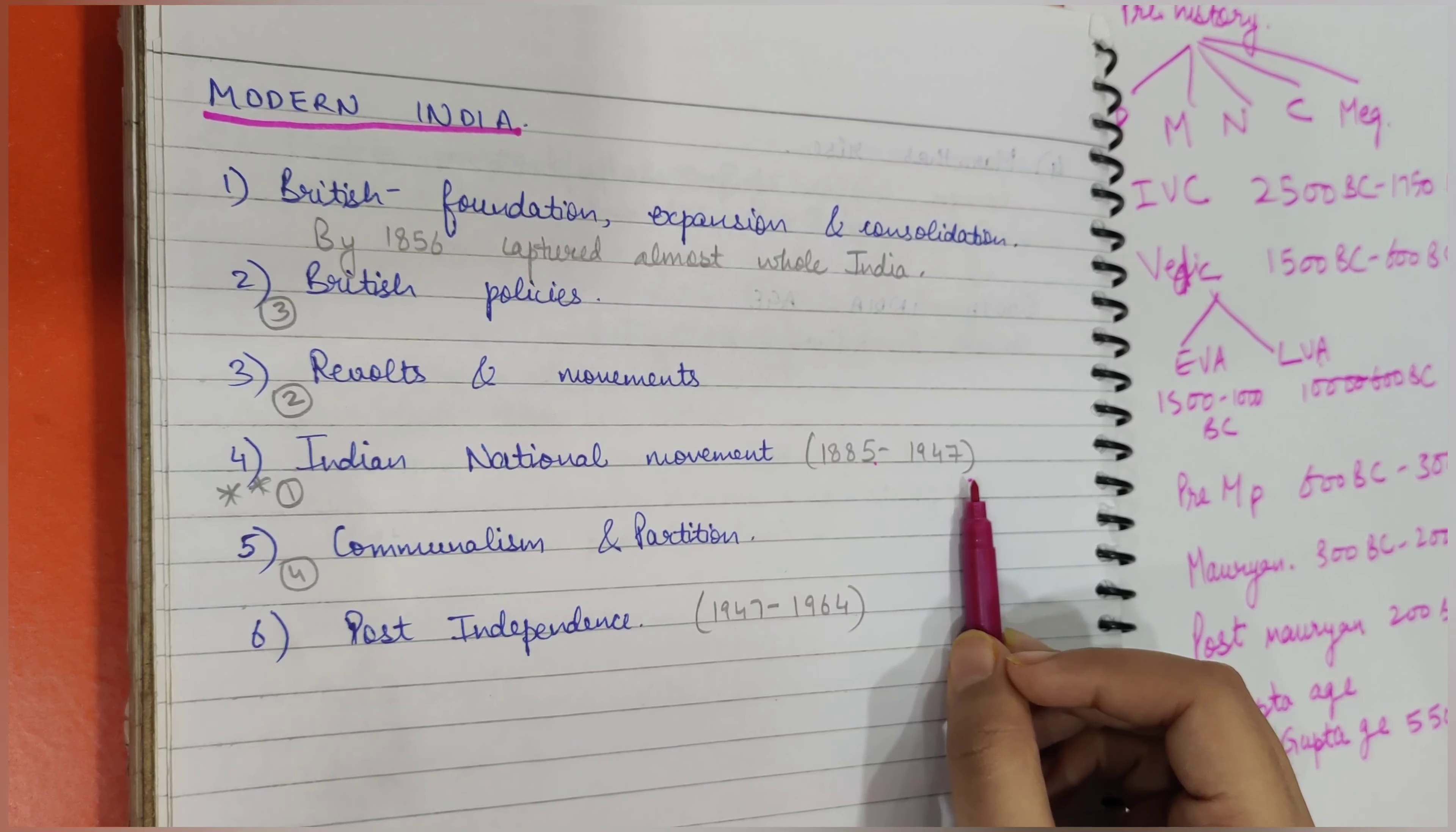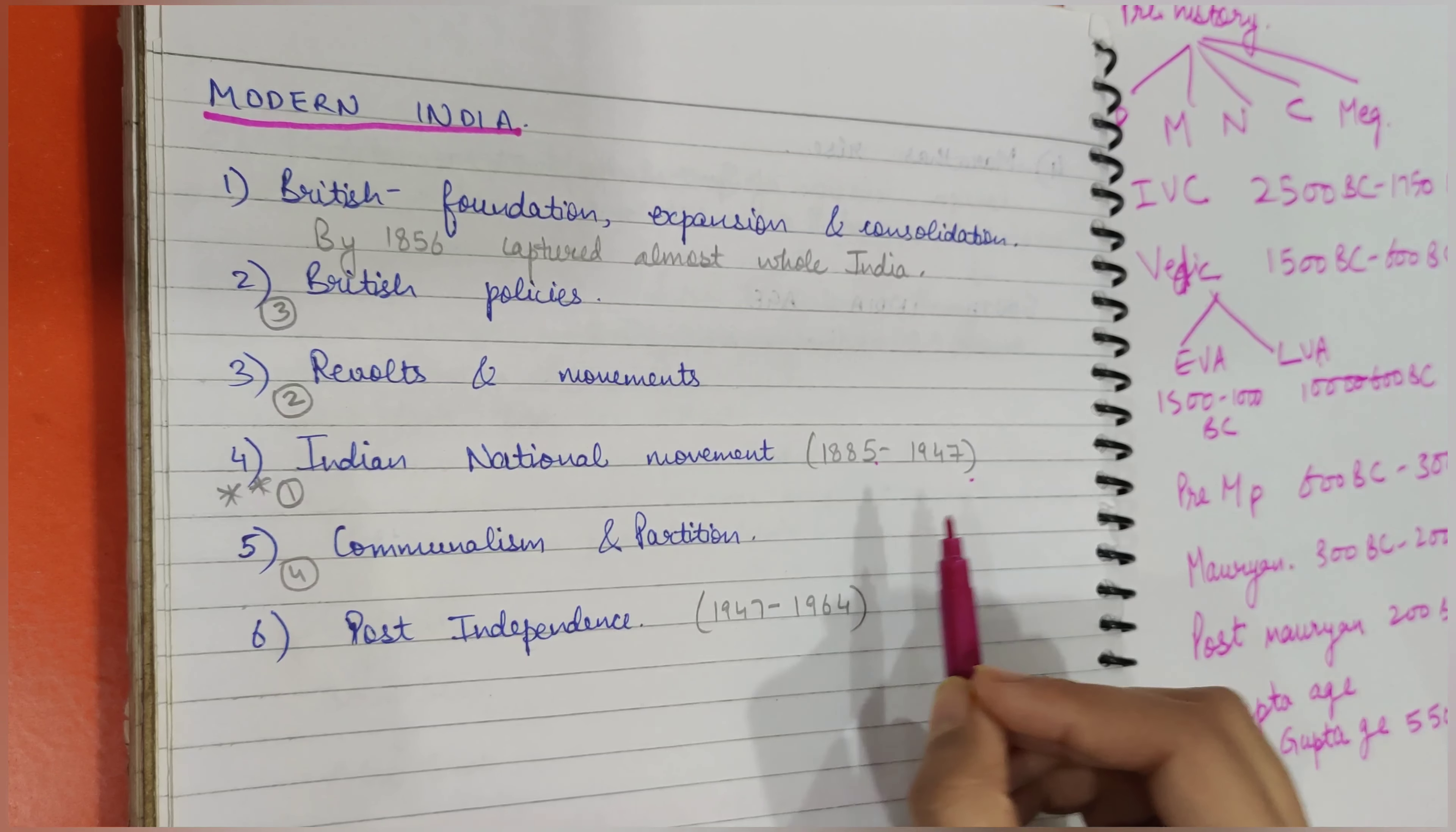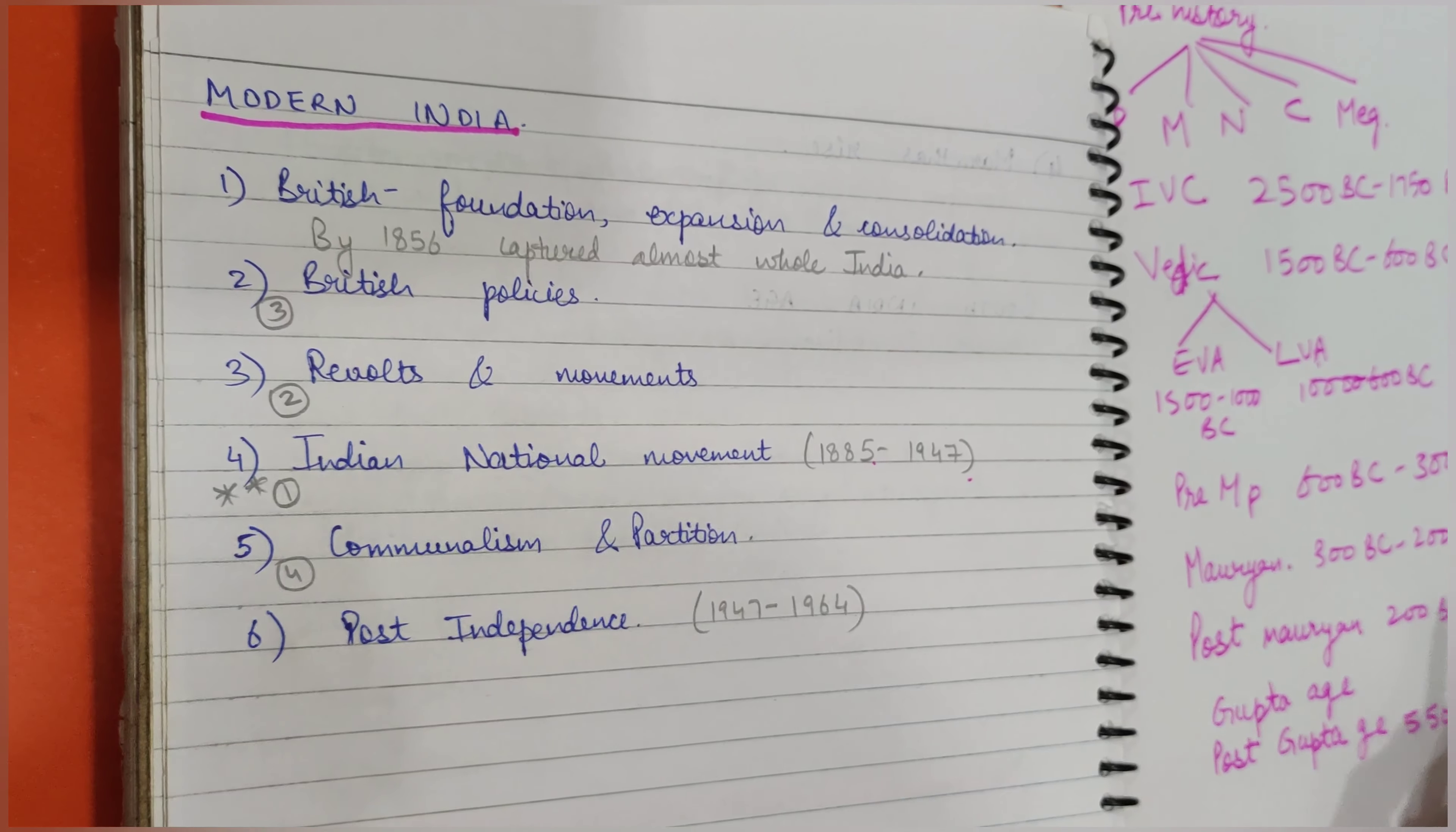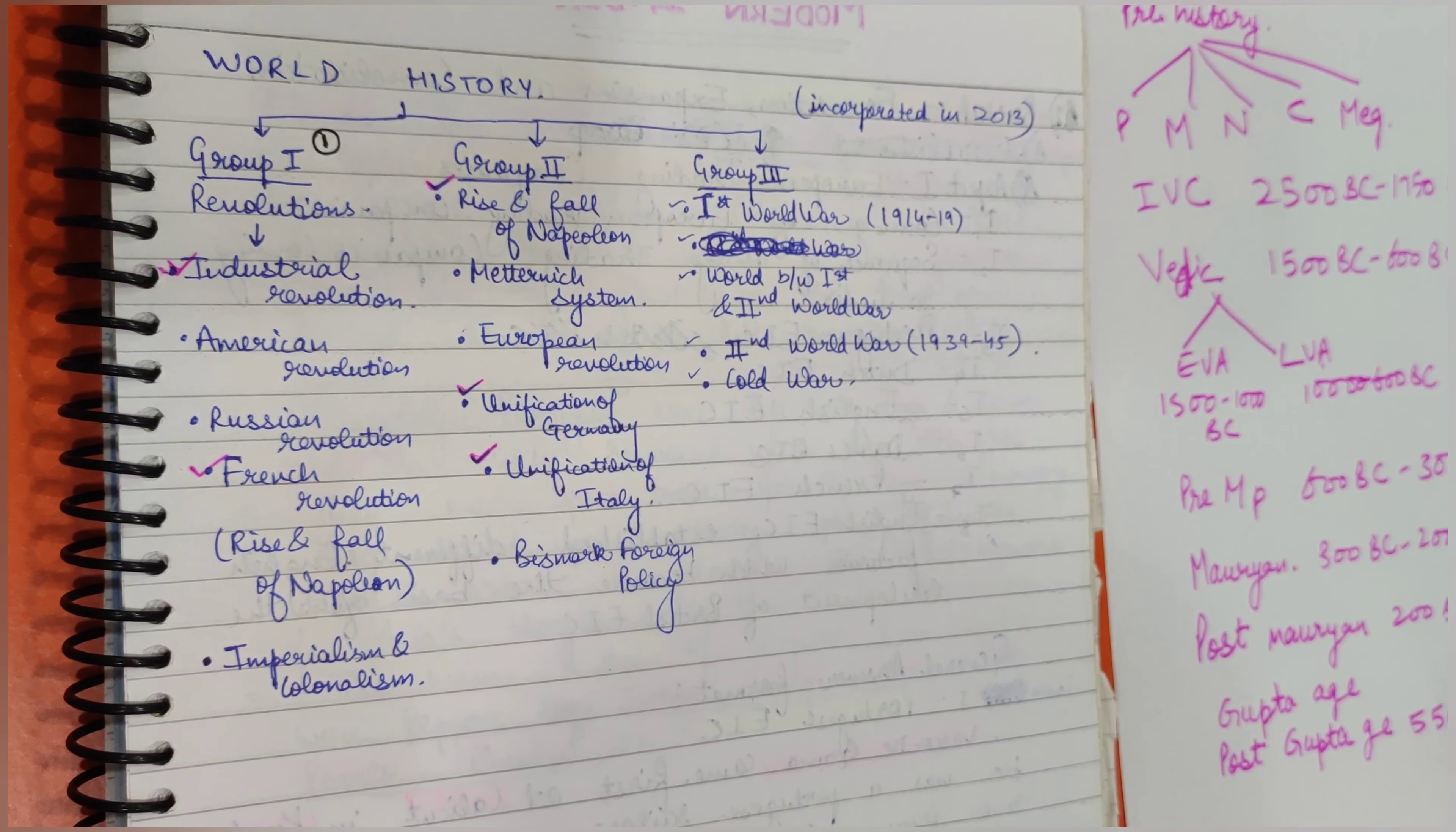Then we'll read about communism and the partition: the partition of Bengal, the partition with Pakistan. Then we'll read about post-independence, what happened after we gained independence. After that, we will be completed with Indian history, the entire Indian history.